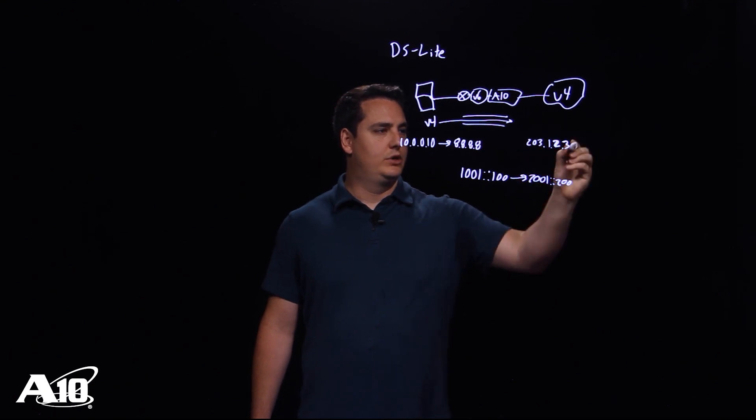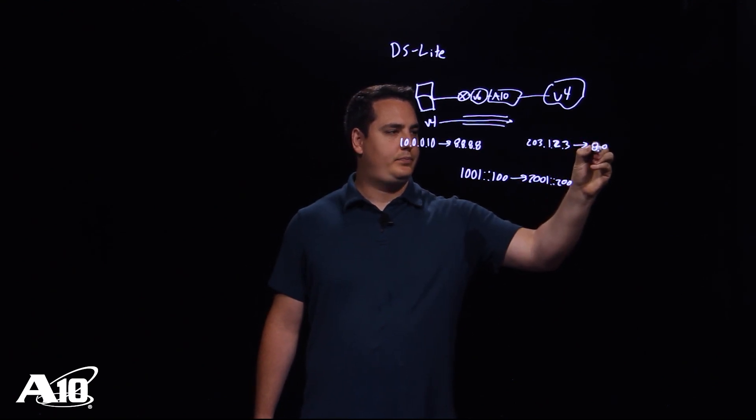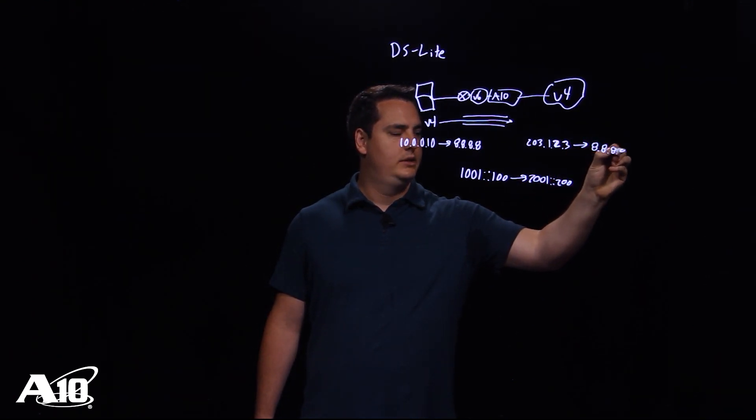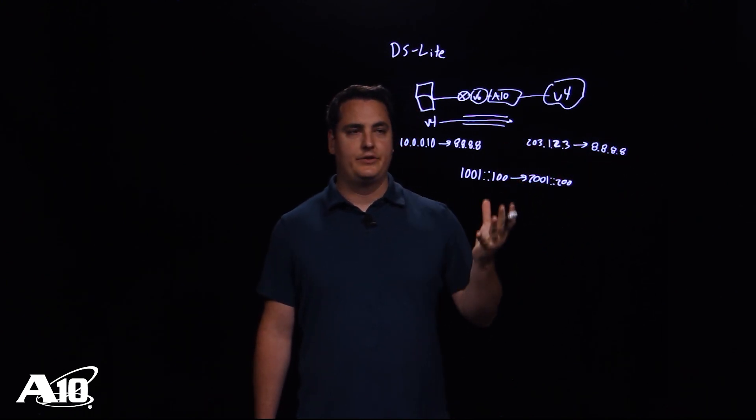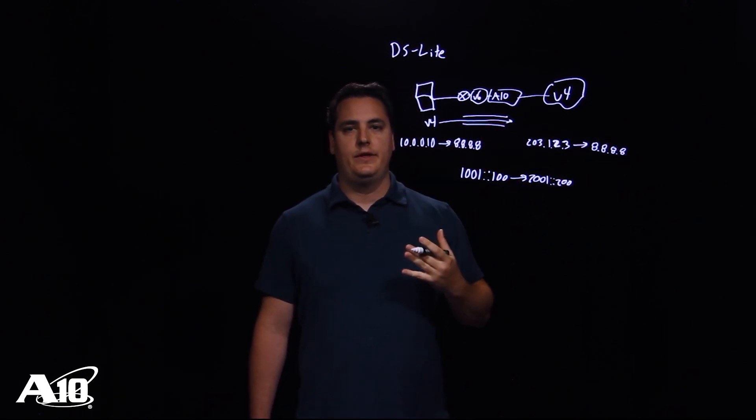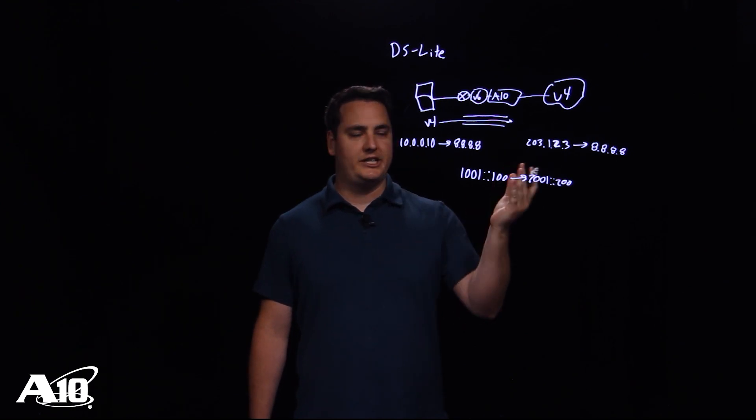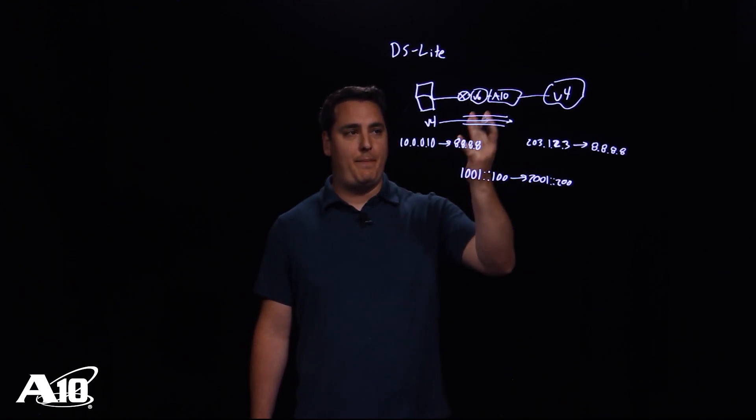So this will go to 8.8.8.8. Google will get the request and it will respond. When the response comes back to this address, the A10 will remember this was the original private IP address. It'll change it back to that and it will put it back into the tunnel.